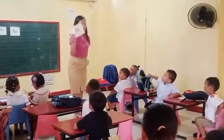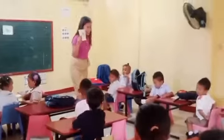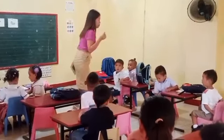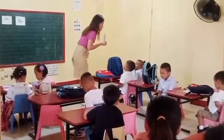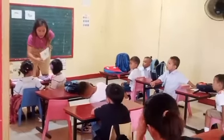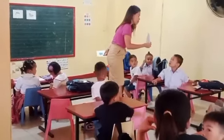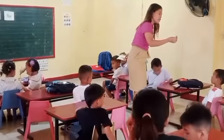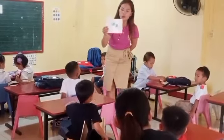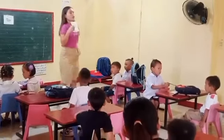This is a sax. The sax is colored blue. What is the color of the sax? Blue. Okay, very good. What is the color of the sax? Blue. Okay, very good. The sax is color blue.